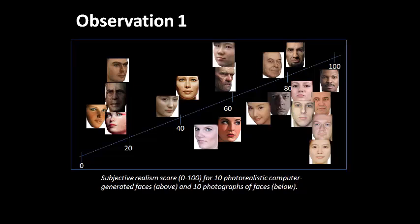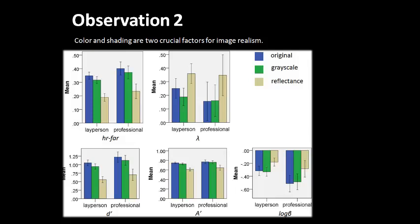Observation one is that, though we find, as expected, variability in human realism perception, there is something intrinsic to photos that makes them more realistic than CG images. Observation two is that color and shading are two important factors for realism. The effect of shading outweighs that of color. This is shown through comparison of signal detection measures across original, shading, and reflectance images.